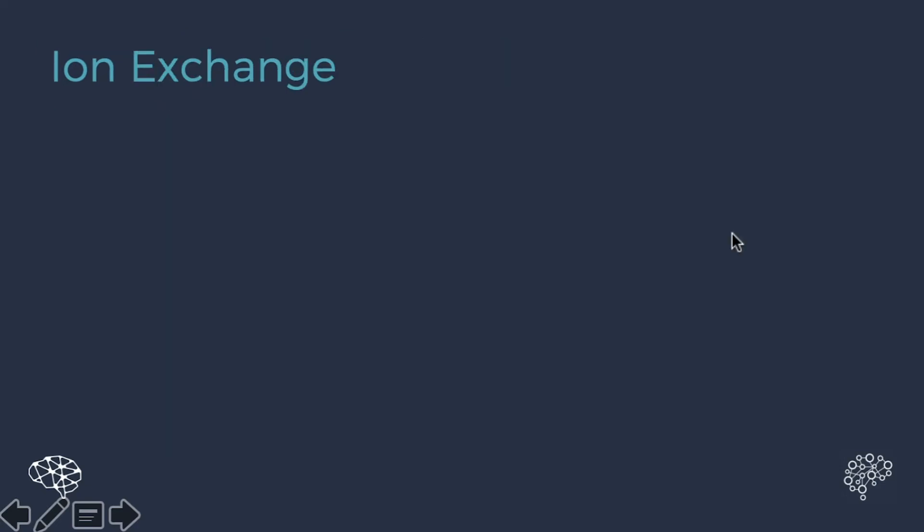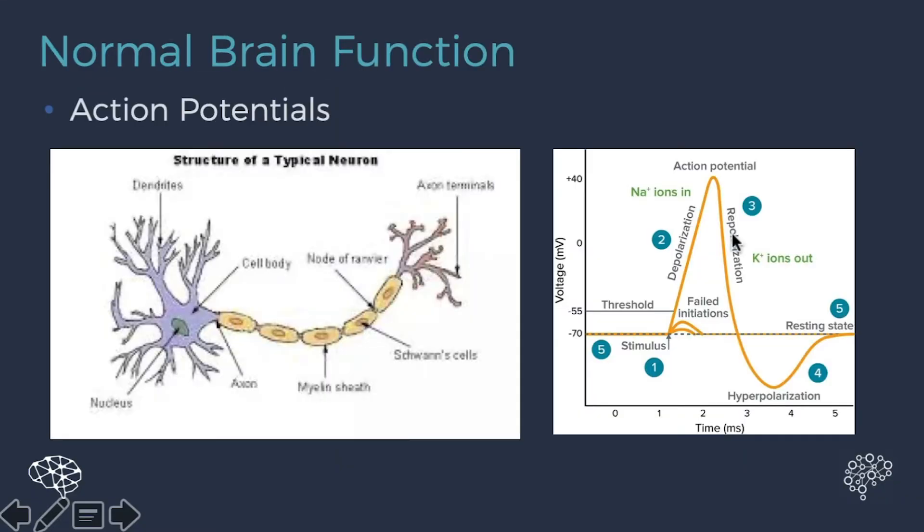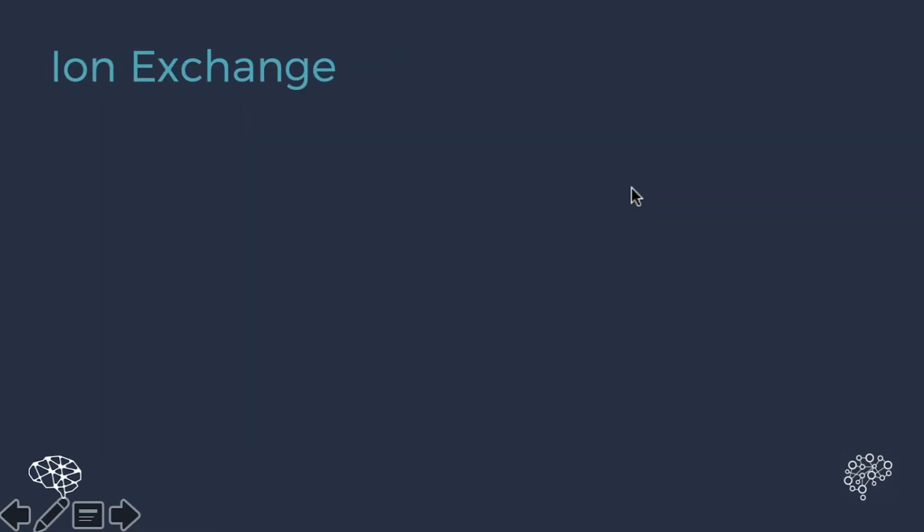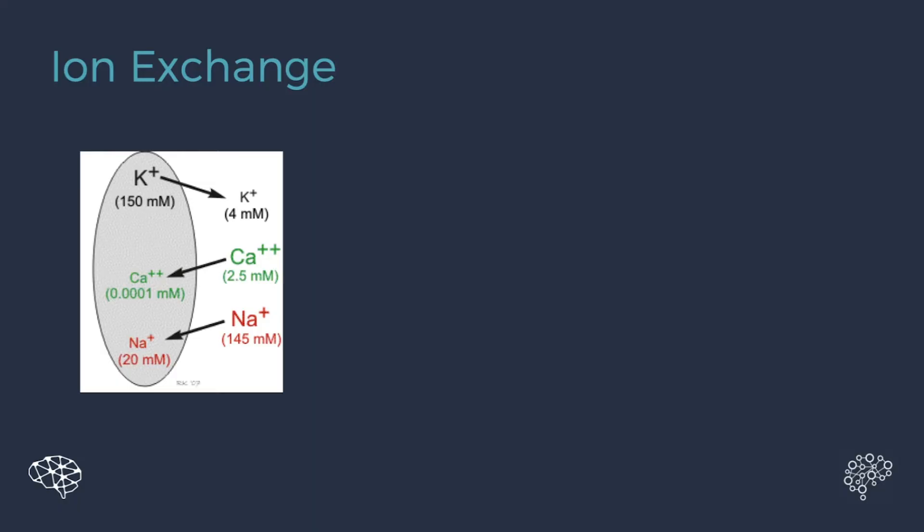Now this is all done via ion exchange. You can see back here in this picture, you have sodium ions coming in, potassium ions going out. So this exchange in ions is actually what leads to this change in voltage and this action potential. So we have something called a concentration gradient.